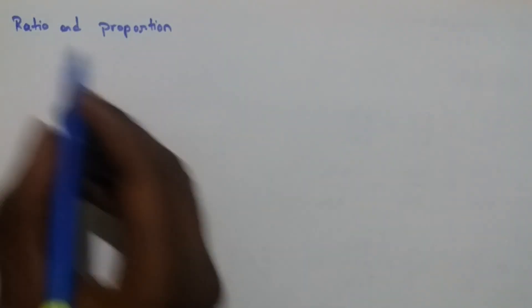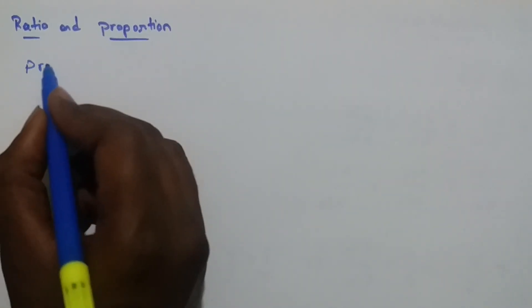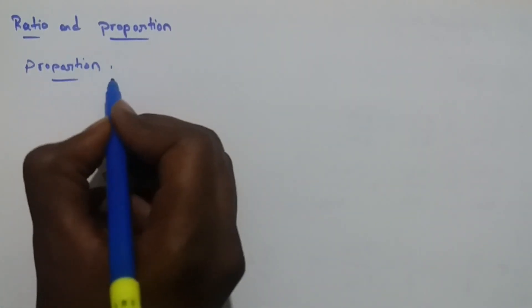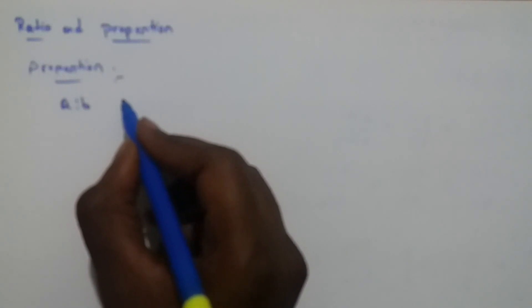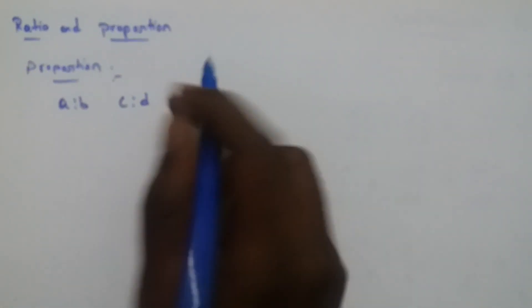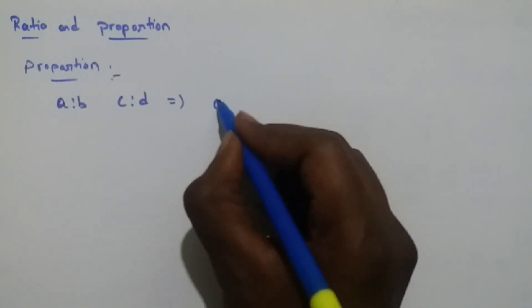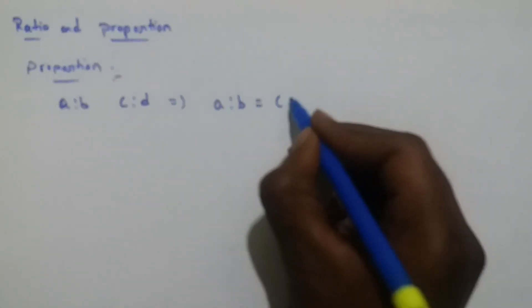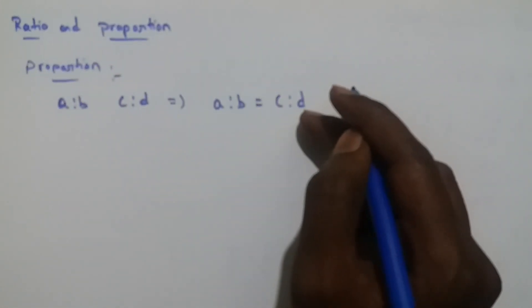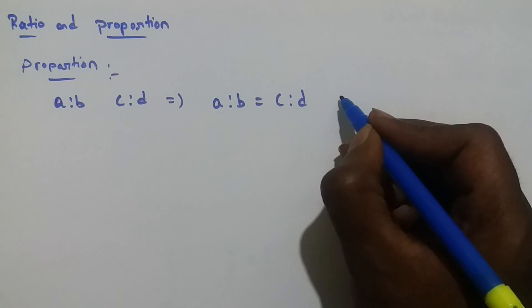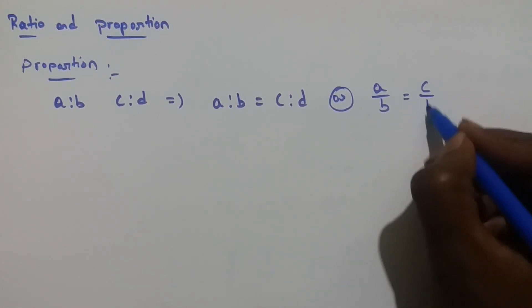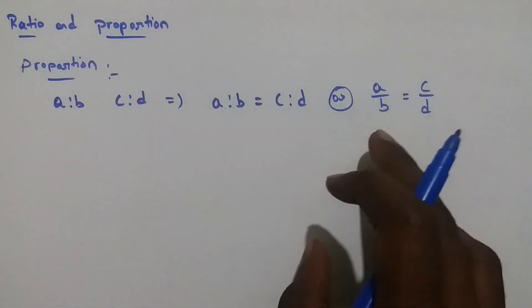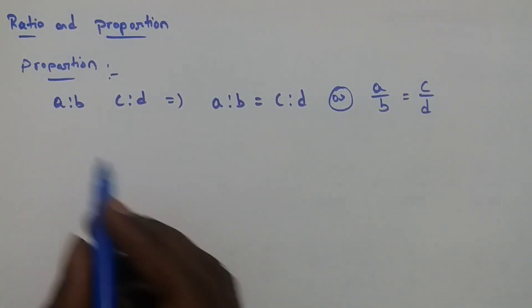Now here we are going to discuss about proportion. A ratio B is equal to C ratio D. So A:B = C:D implies A/B is equal to C/D. When A/B is equal to C/D, the four values are in proportion.